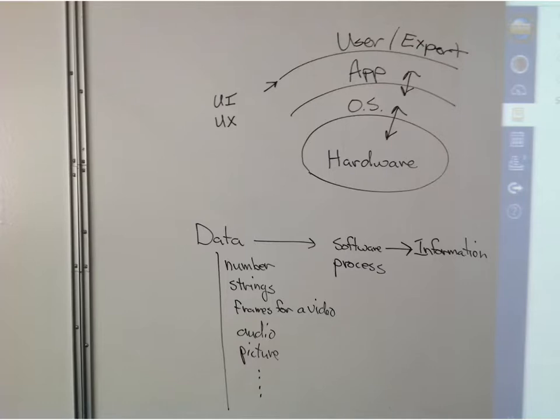We reviewed some things from the quiz. I talked about how important data. We have data. All these things represent ones and zeros. Numbers, strings, frames for a video, audio, pictures, stuff nowadays we represent in computers.